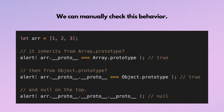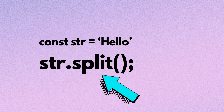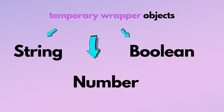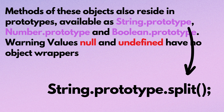We can access object.toString even if we haven't specified it in a prototype, because built-in objects like Array, Date, Function and others have methods in their prototypes. We can manually check this behavior. What about primitives? If we try to access their properties, temporary wrapper objects are created using built-in constructors — String, Number, and Boolean. These objects are created invisibly to us and most engines optimize them out. Methods of these objects also reside in prototypes, available as String.prototype, Number.prototype, and Boolean.prototype.